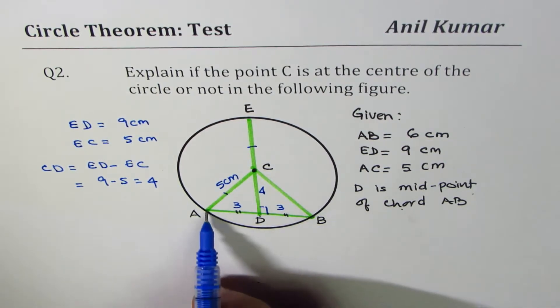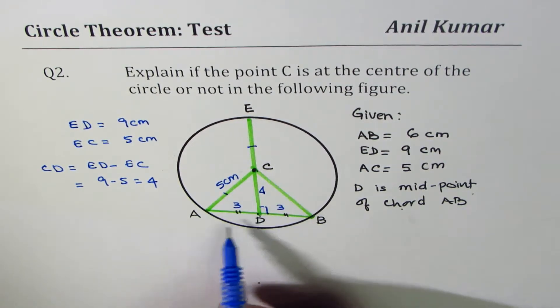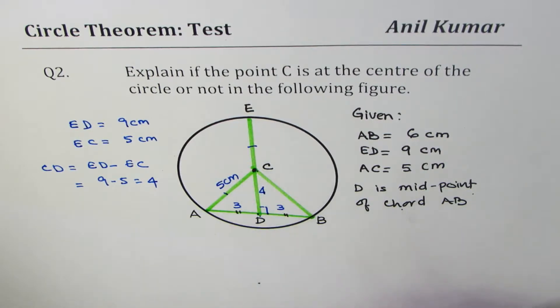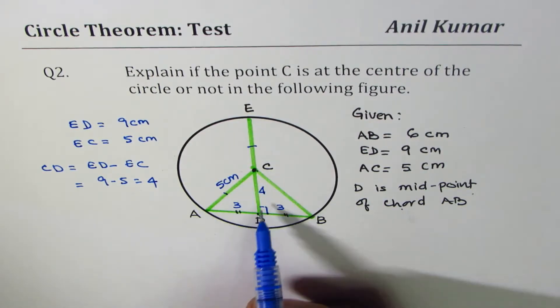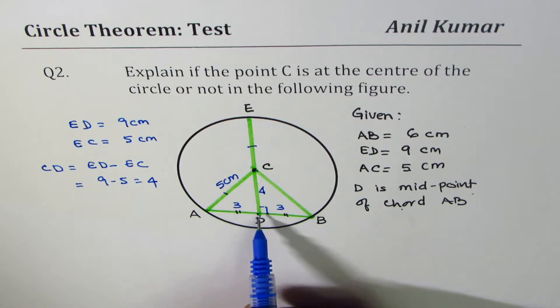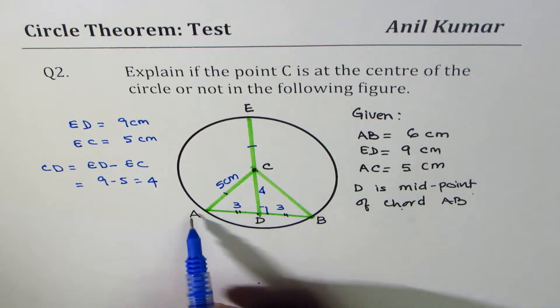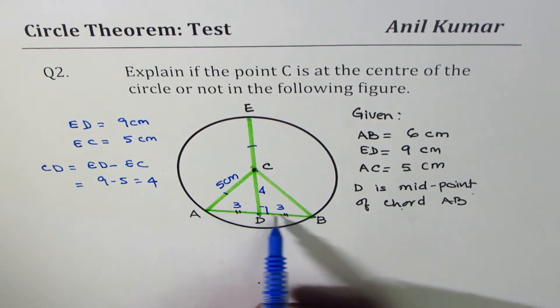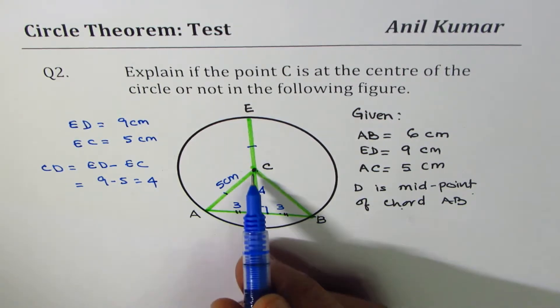So we need to check if AD square plus CD square is equals to AC square or not. If that is true, then the triangle ACD is right triangle. And we know from rule 1 that right bisector of the chord will go through the center.